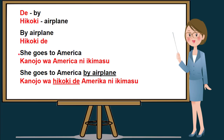We will be using another sentence: she goes to America. And we will be combining this sentence with by airplane. We will be translating she goes to America in Nihongo first. She, which is a pronoun, is kanojo, followed by wa. And again, we will be using ni, which is a particle that indicates location, America. And ikimas is to go. So, she goes to America in Nihongo is kanojo wa America ni ikimas.